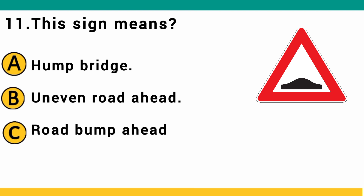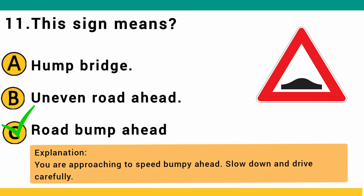This sign means: A) ramp bridge, B) uneven road ahead, or C) road bump ahead. The correct answer is C: road bump ahead. You are approaching a speed bump ahead — slow down and drive carefully.